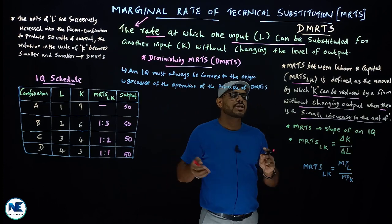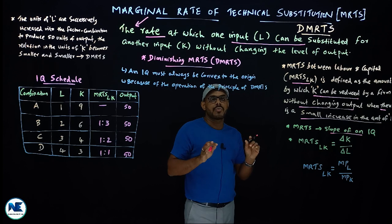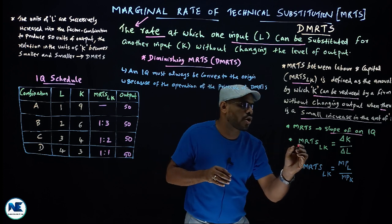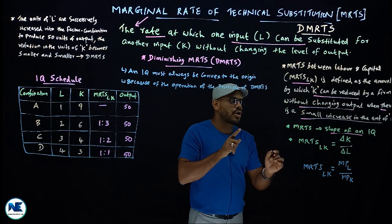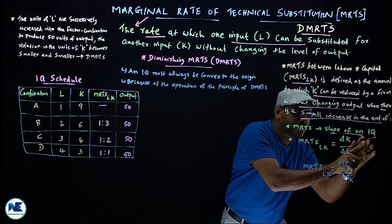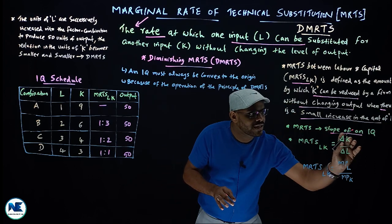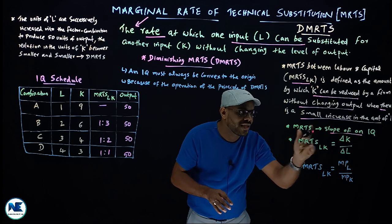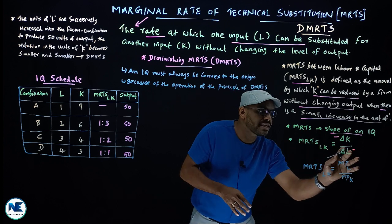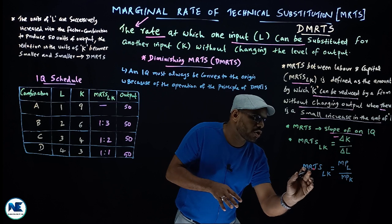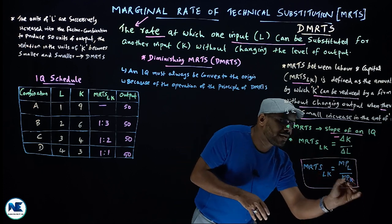We have already discussed in previous videos that MRTS is the slope of an isoquant. The slope is vertical distance divided by horizontal distance. So MRTS between labor and capital equals ΔK divided by ΔL — that is, the change in units of capital divided by the change in units of labor. This can also be written as MRTS_LK equals marginal product of labor divided by marginal product of capital.